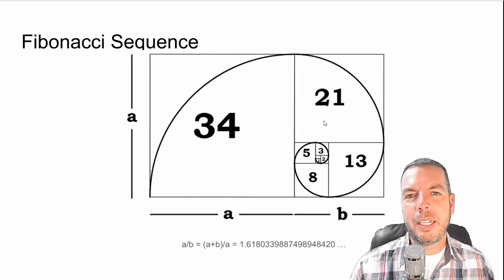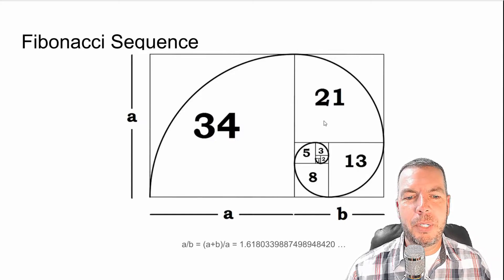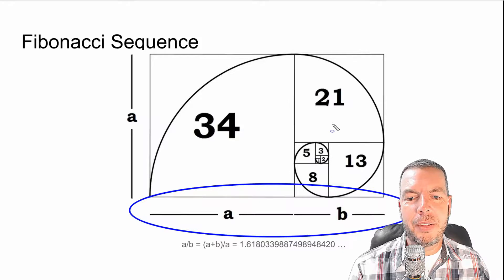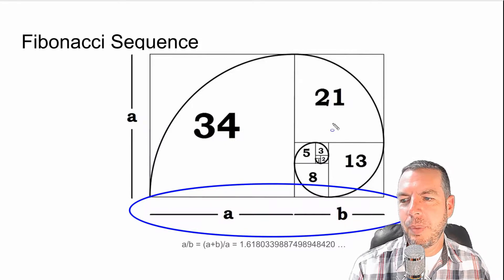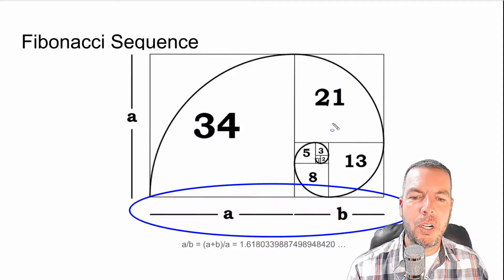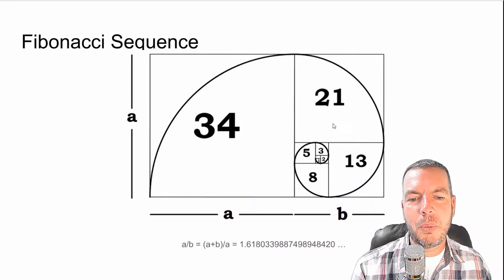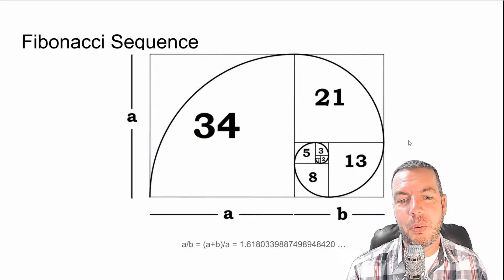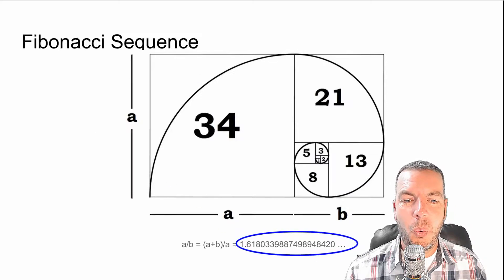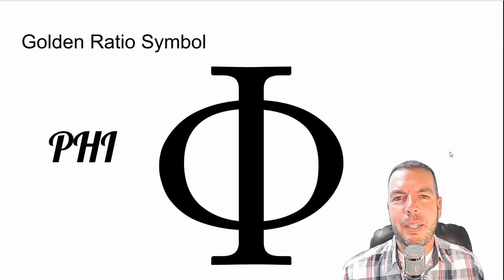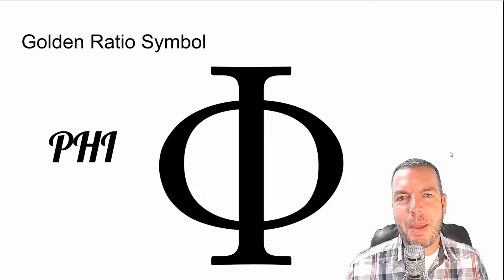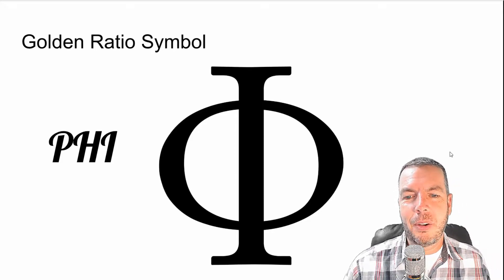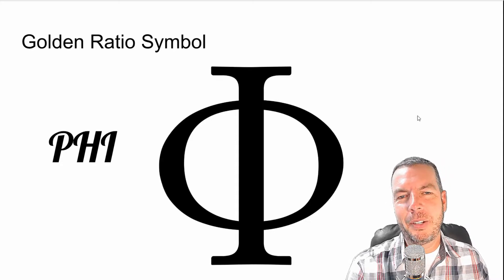Basically, when we talk about the golden ratio, if we take a line and divide it into two parts — the longer part divided by the shorter part equals the total length divided by the longer part — and that number comes out to 1.618, the golden ratio. The golden ratio symbol is the 21st letter of the Greek alphabet, called Phi. So if you ever see that symbol, now you know that's the golden ratio number.